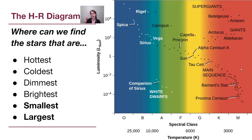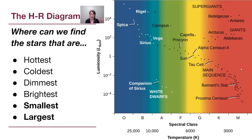I want you to pause the video and think through where in this plot we can find the stars that are hottest, coldest, dimmest, brightest, smallest, and largest. So pause the video and write down your estimate for every single one of these, and then we will get to the answers.